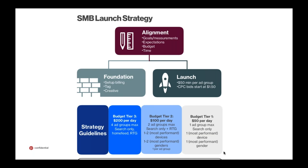We want to align on goals, expectations, and our test budget — that's important. The biggest thing here is that when you're building an ad group, it's important to have no less than fifty dollars per ad group per day with a CPC bid of about a dollar fifty. Our ads manager does disclose a competitive CPC bid, but this is a good mental starting point. People tend to fall short by launching fifty ad groups with five dollars a day, and then our system just can't get enough delivery to understand what is going to work.